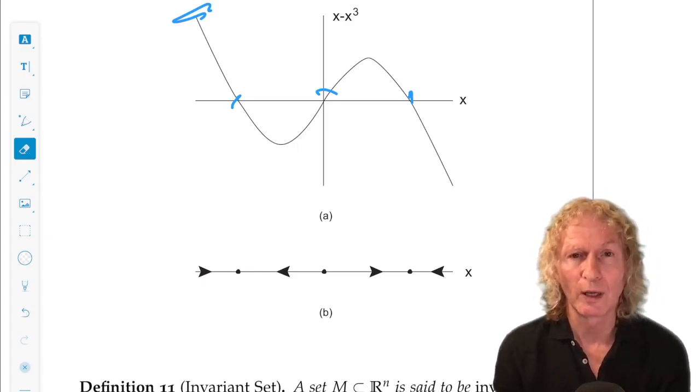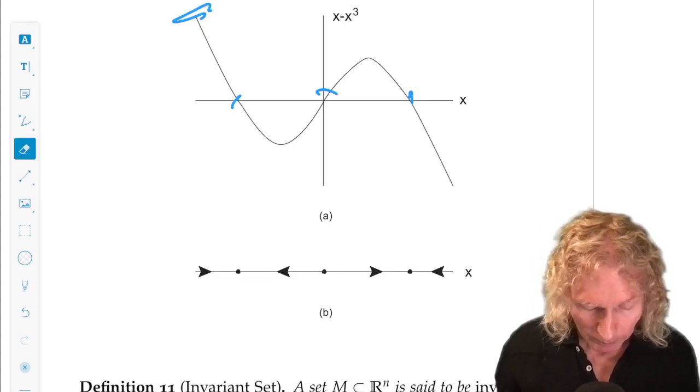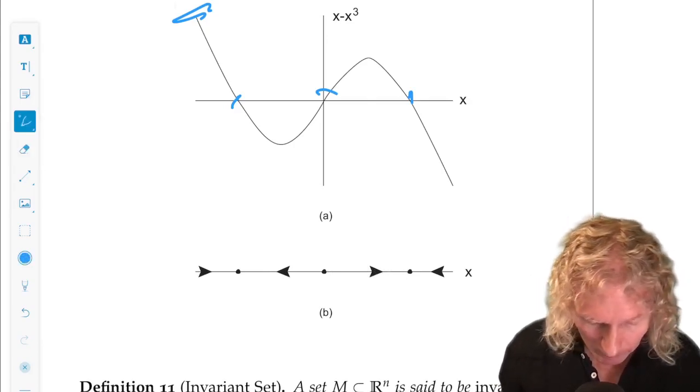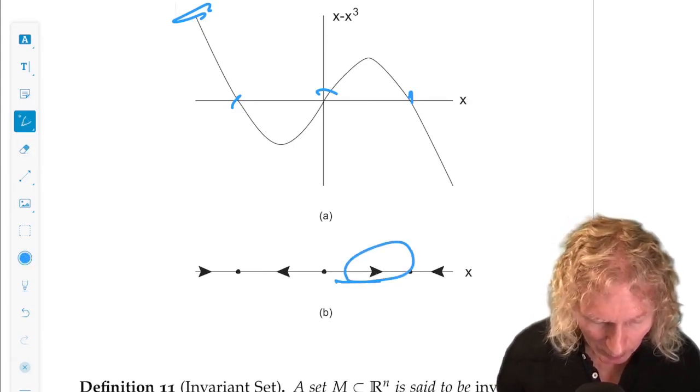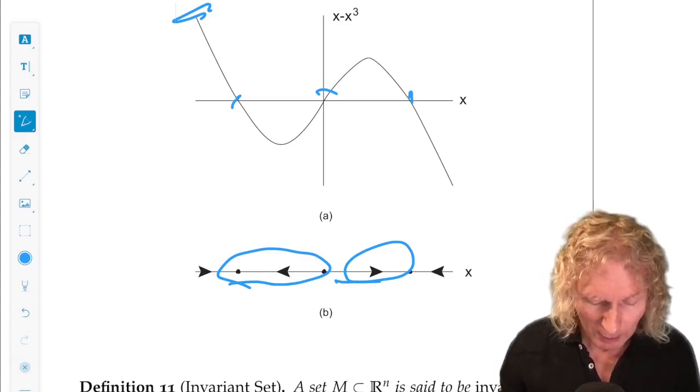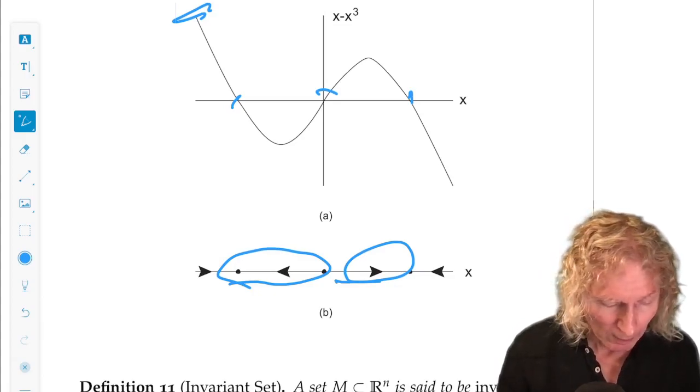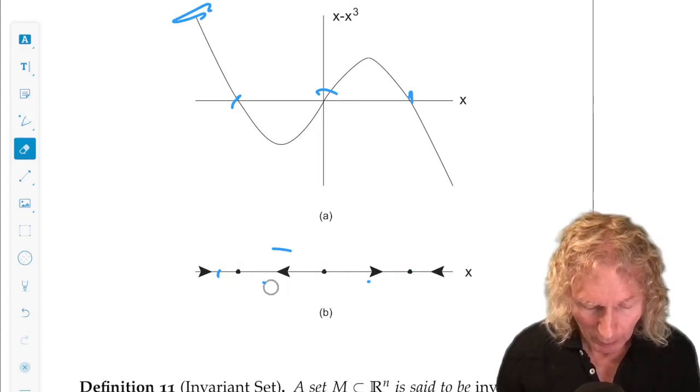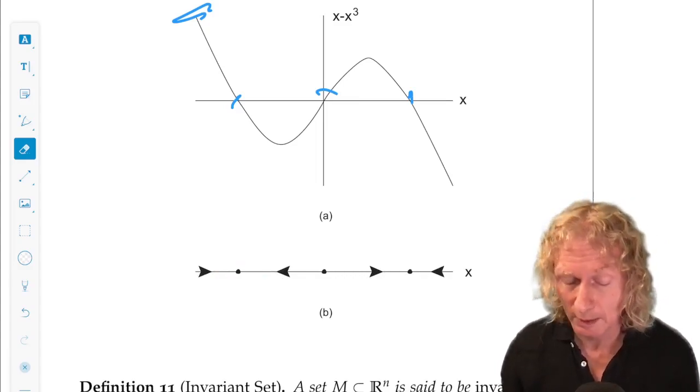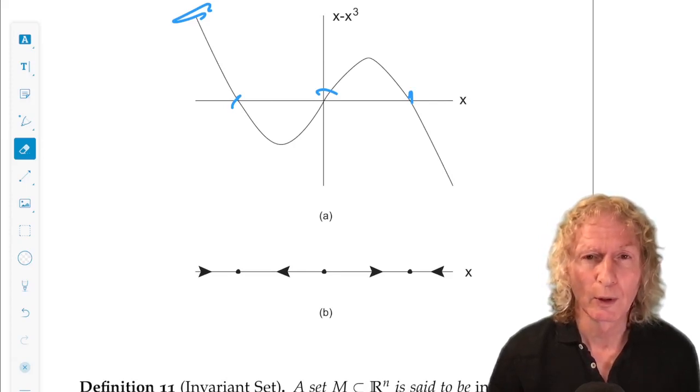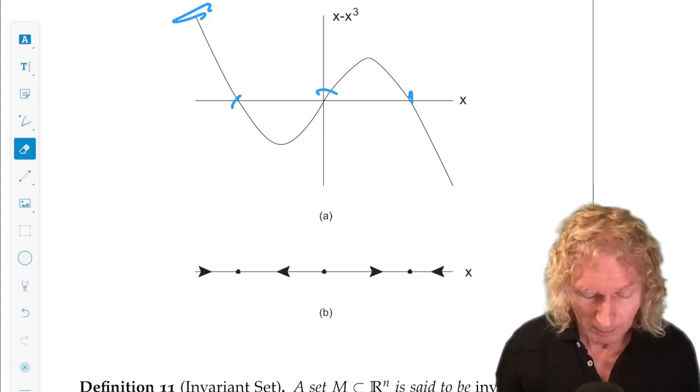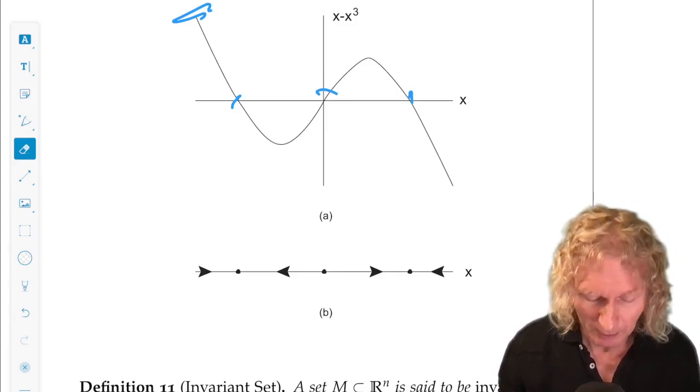You also see two examples of heteroclinic connections. The connection between zero and one and the connection between zero and minus one. And if you look at the trajectory through that initial condition, it will approach asymptotically in time. The equilibrium point at one in negative time, it will approach asymptotically. It never gets there until T reaches infinity. But think about that.